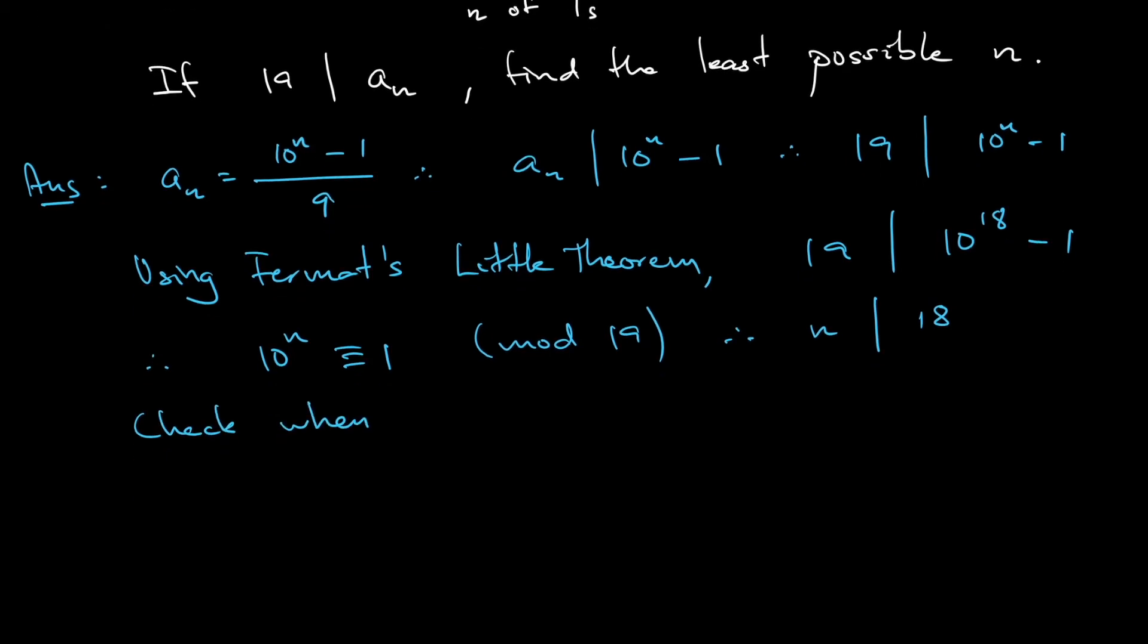When n is 2, you don't need to check 1. When n is 2, that's 11, so 19 divides a_2 which is 11, so 10^2 - 1, that's 99. Basically we check with this condition.